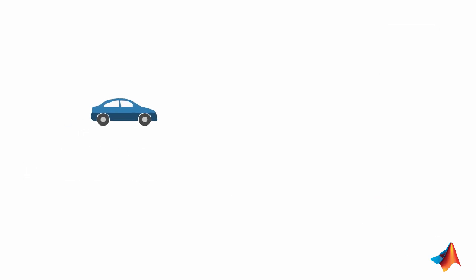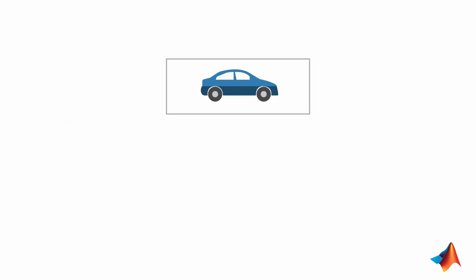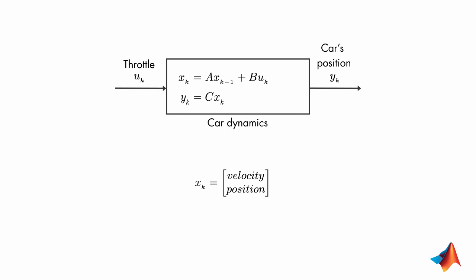Let's look at the system to understand how the Kalman filter works. The input to the car is the throttle. The output that we're interested in is the car's position. For such a system, we would have multiple states. But here, to give you intuition...